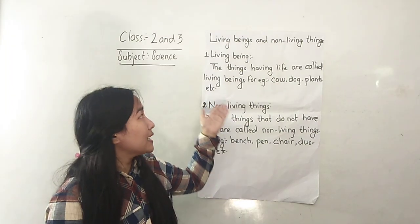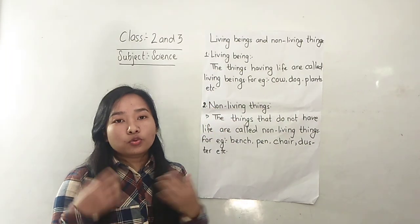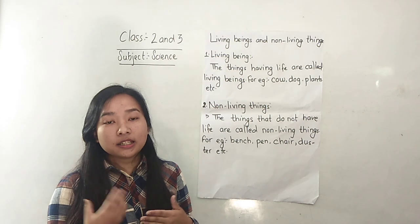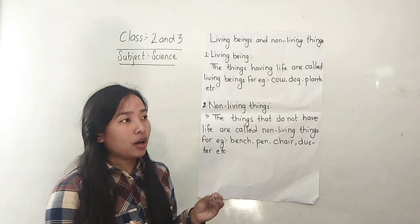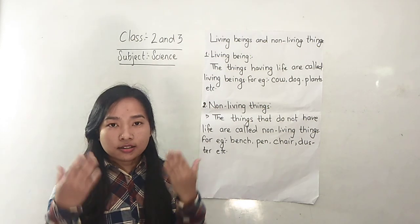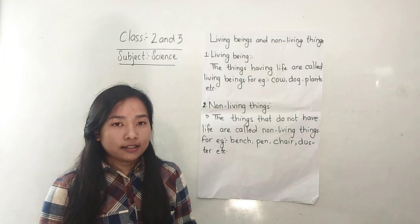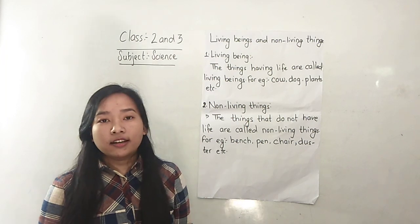Living beings produce sweat. Living beings throw out sweat, tears, spit — they spit out, they urinate, they defecate. This removal of unwanted waste is called excretion.